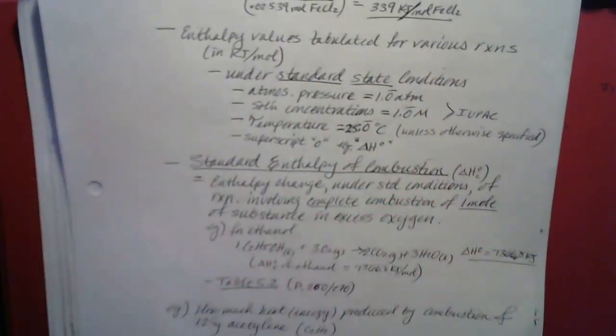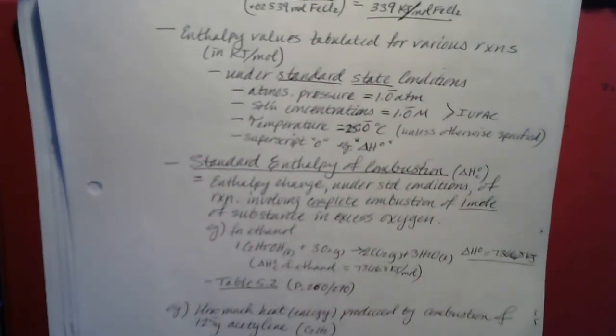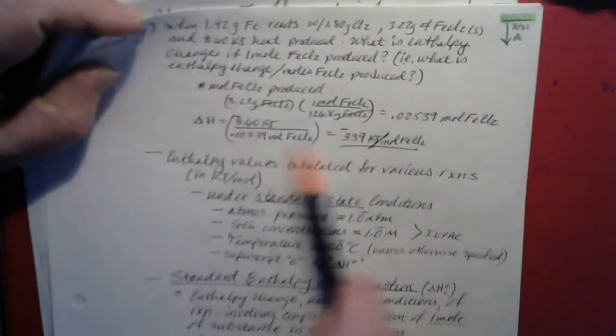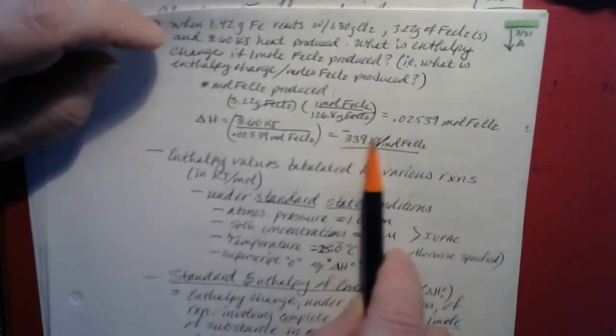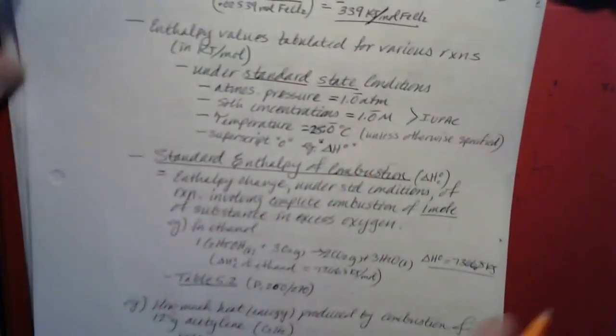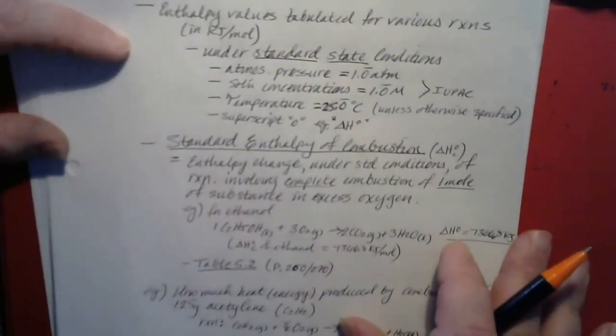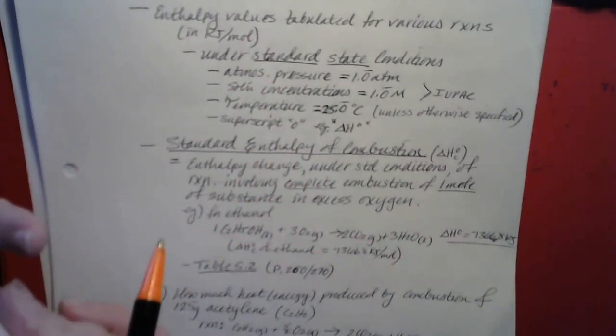Enthalpy values are characteristic of a given reaction under given reaction conditions. As long as you specify the reaction conditions, you should always find the same enthalpy value for a given reaction — in terms of per gram or per mole of a reactant or a product. This reaction should always produce 339 kilojoules of energy for each mole of iron chloride produced, no matter how much or how little is produced. Because of that fact, there are tables that contain enthalpy values for various reactions in kilojoules per mole, listed under specific conditions.